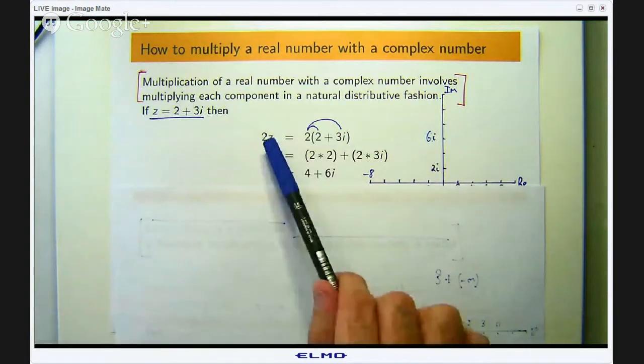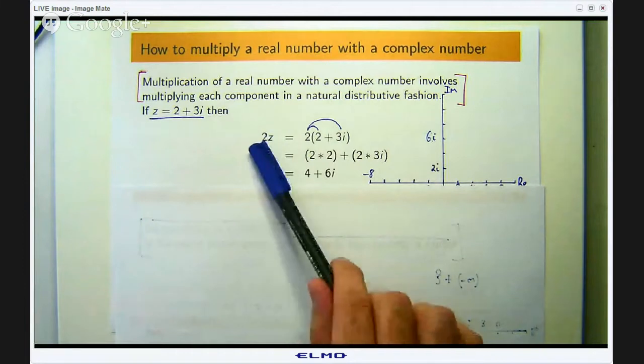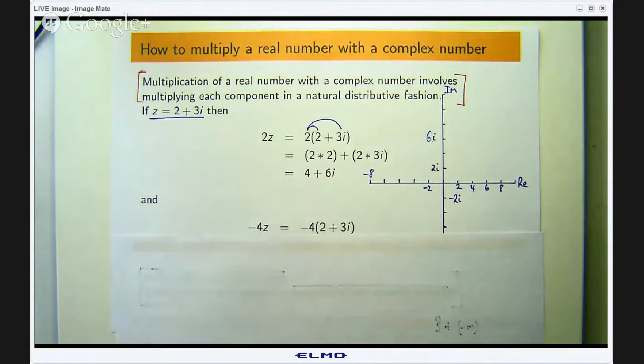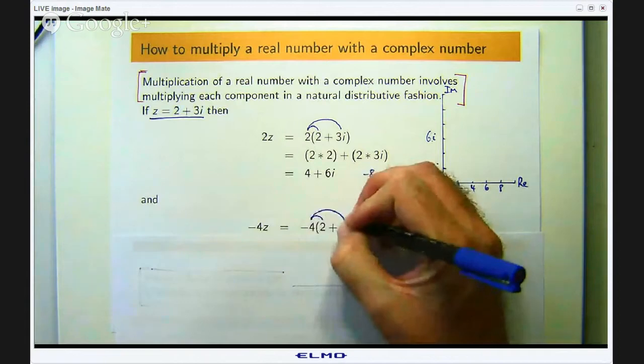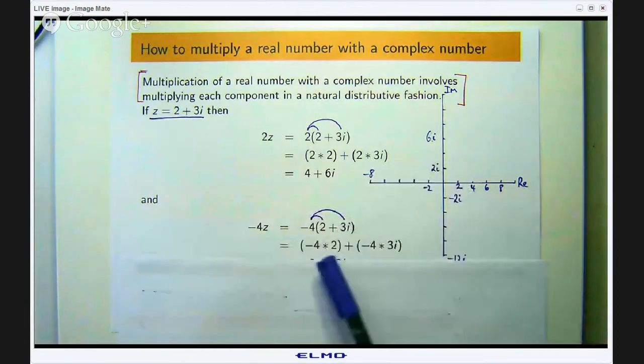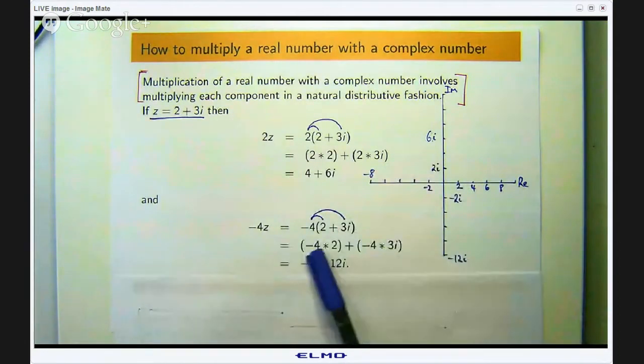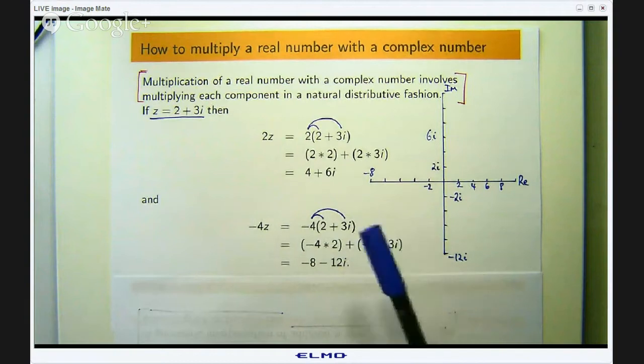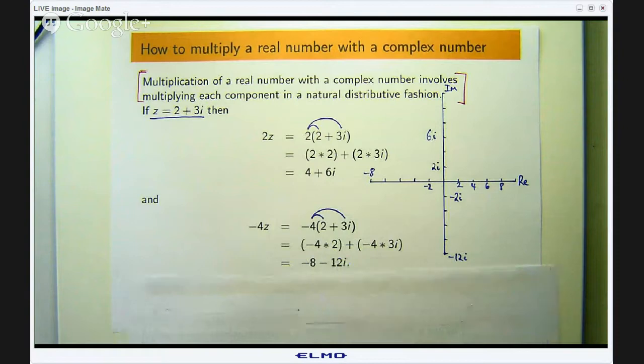Okay well what happens here the scalar that I was using was a positive number. What happens if we multiply by a negative number? Let us say we want to compute negative 4 times z. Well it is the same sort of thing, you distribute the negative 4 and you will get negative 8 plus negative 12i which is just negative 8 minus 12i. So it is pretty easy.